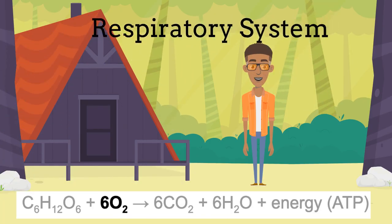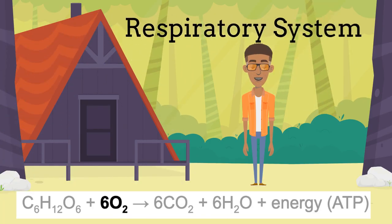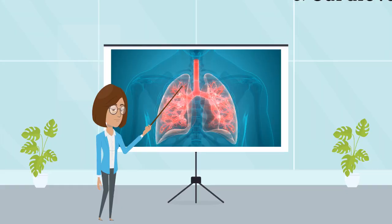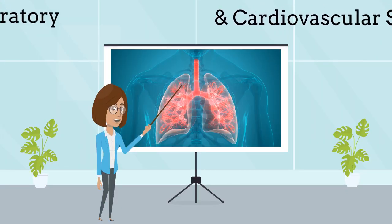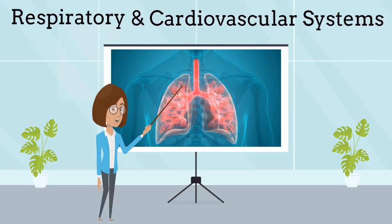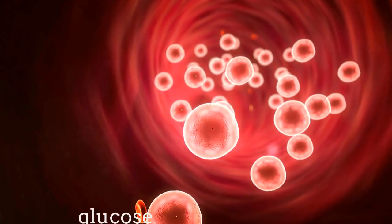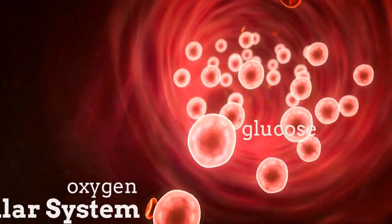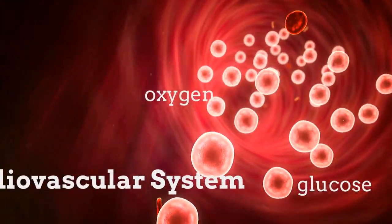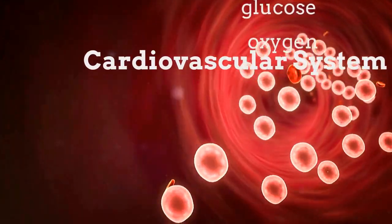The oxygen comes from the air we breathe. When you inhale, the oxygen travels through your respiratory system to your lungs, then diffuses into your blood vessels, which are part of the cardiovascular system. The cardiovascular system delivers the reactants to cells throughout your body.